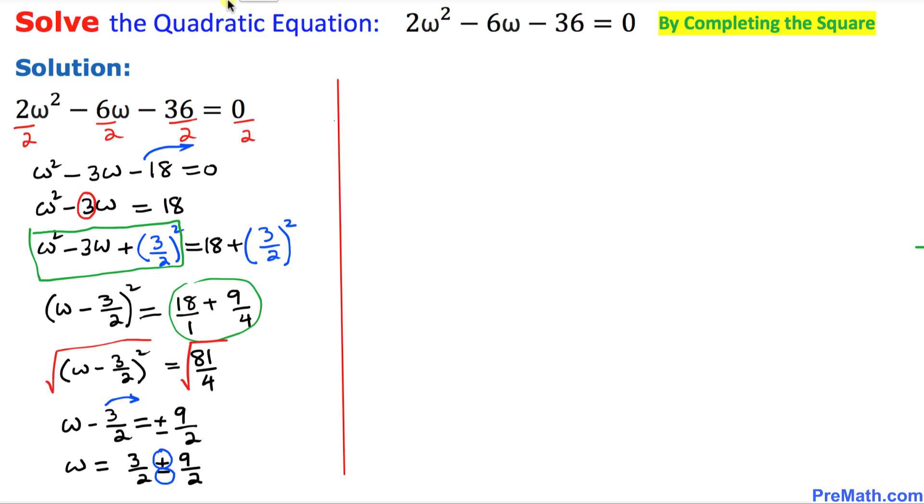I'm going to write down ω = 3/2 + 9/2 and on the other side ω = 3/2 - 9/2. Since we have the same denominators, 3 plus 9 over 2 equals 12 divided by 2, which equals 6. So one solution is ω = 6.